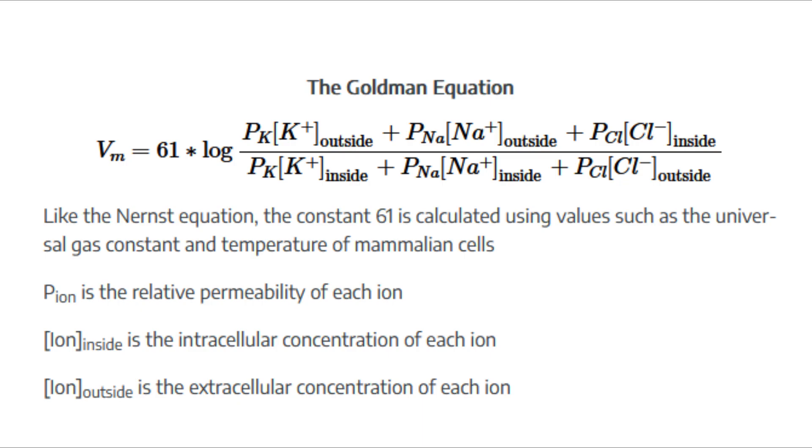With K+, typically, given the highest relative permeability, which is often set to one, smaller values for sodium, in other words 0.04, and intermediate values for chloride, or 0.4, yields a calculation close to minus 65 millivolts. Changes in any ion's relative permeability or concentration can shift the resting membrane potential, which is really important for understanding how neurons respond to stimuli.